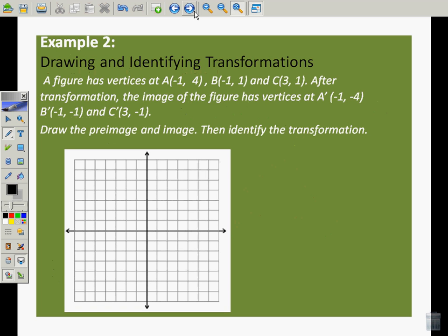Moving into the coordinate plane. A figure has vertices at A, B, and C. After the transformation, the image of that figure has different vertices. When we are looking at this, we are going to be taking a different approach. We're going to be using the graph to kind of show us. First of all, I need to make a little bit of a change here. The vertices are correct.